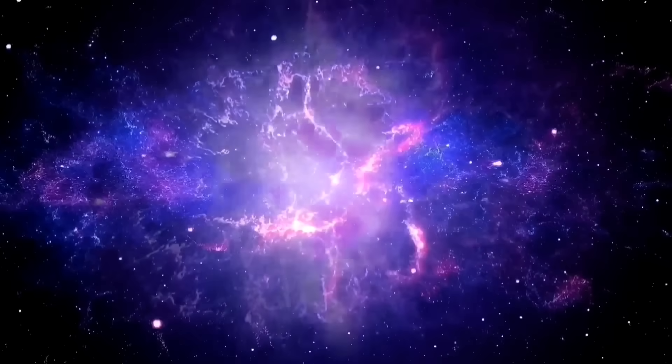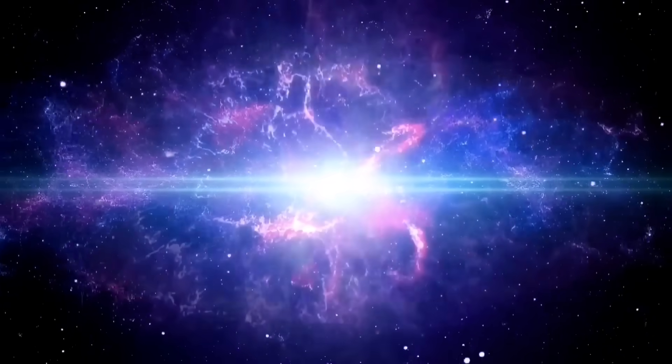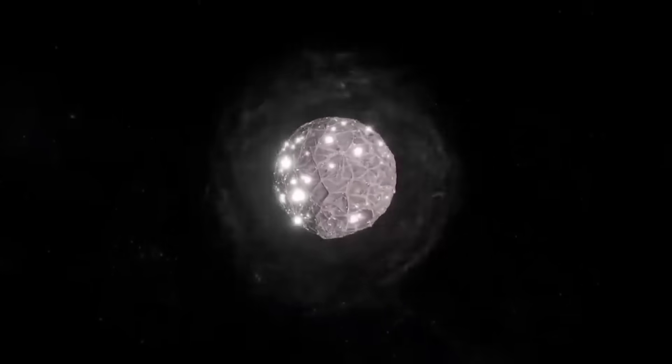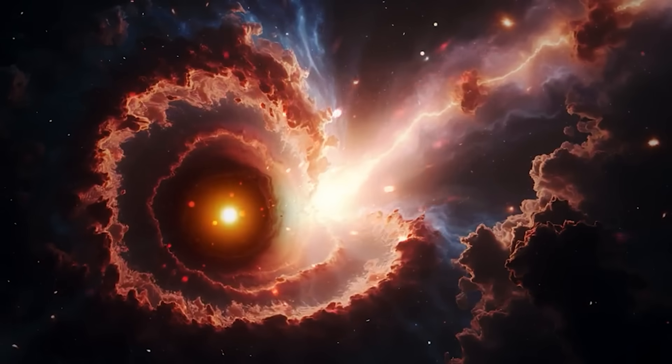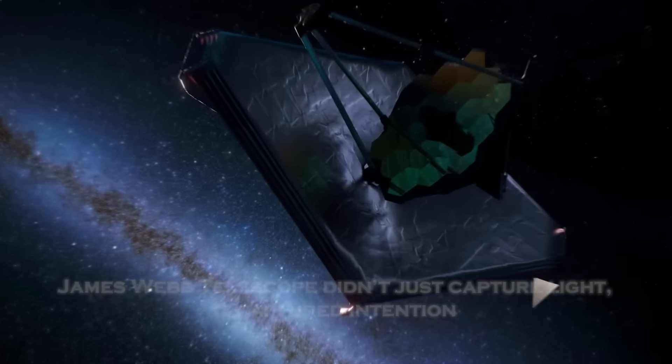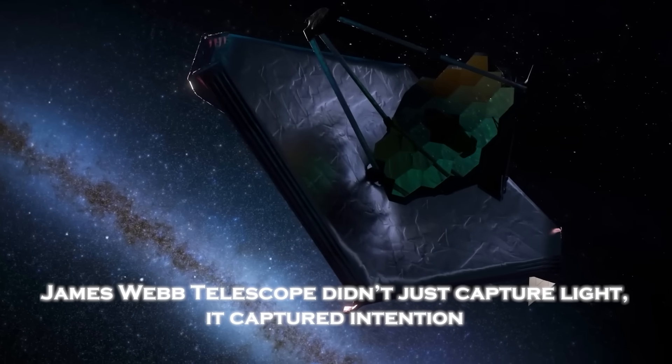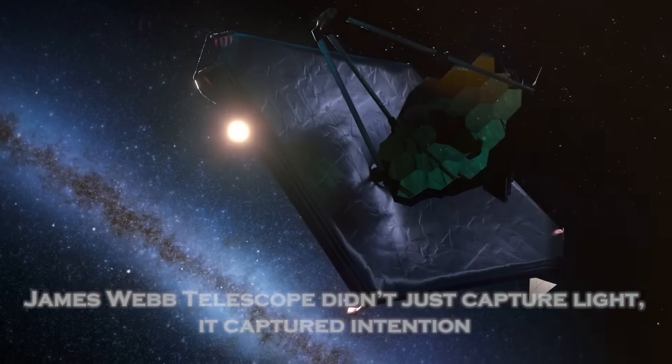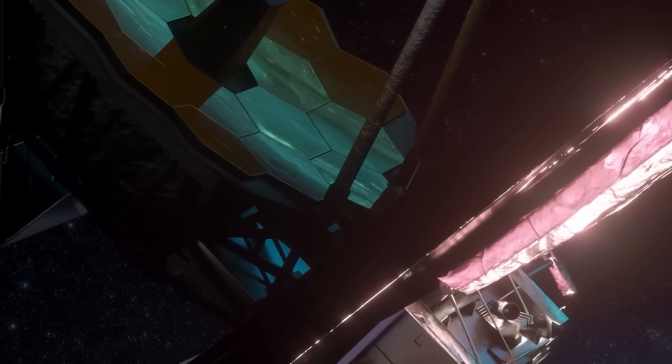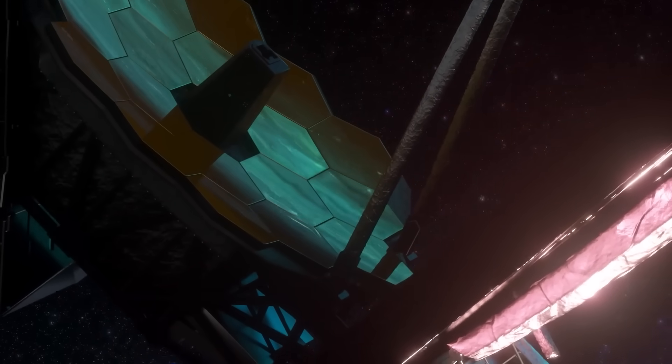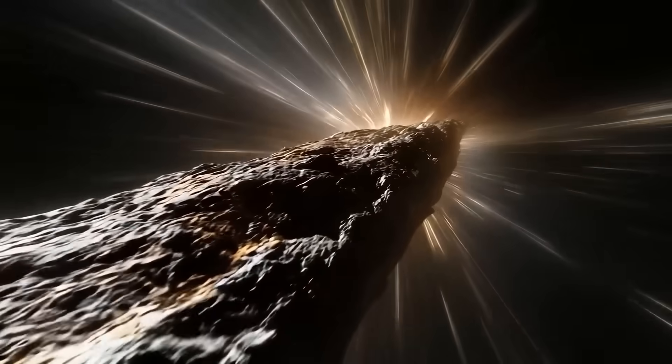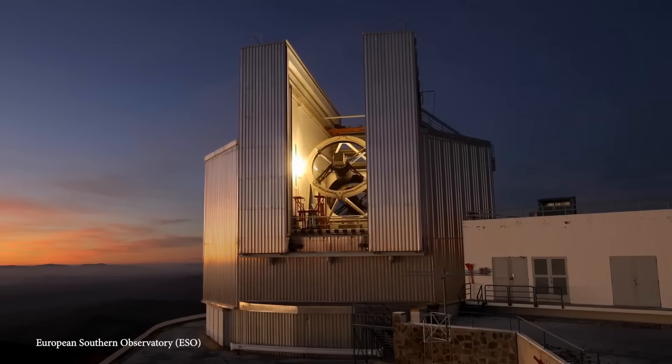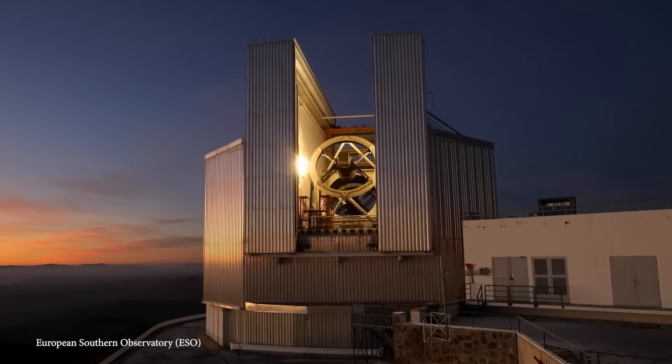So tonight, as you sit here replaying the ultraviolet pulses, the hexagonal surface, the controlled jets, the hollow architecture, the silence behind the sun, remember this. The James Webb Telescope didn't just capture light. It captured intention. It showed us something terrifying, not because it threatened us, but because it didn't need to. It watched. It signaled. It left. And now the question echoing across every observatory on Earth isn't what was 3i Atlas. But how many times has something like this passed by before we were even capable of noticing?